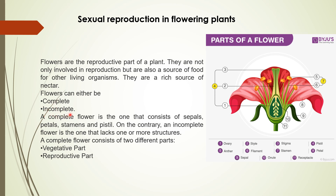On the basis of these four important parts, flowers are of two types: complete and incomplete. If all four parts — sepal, petal, stamen, and pistil — are present in a flower, it is known as a complete flower. If any one of them is lacking, it is known as an incomplete flower. Among the four whorls, two are known as vegetative parts and two are known as reproductive parts.